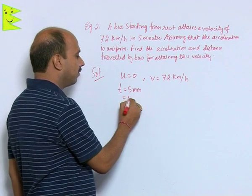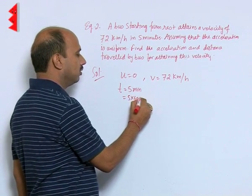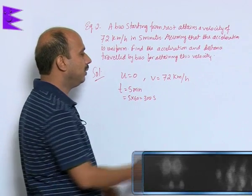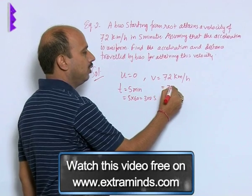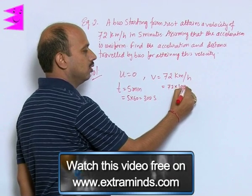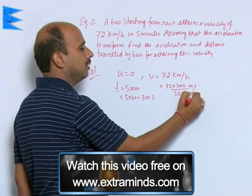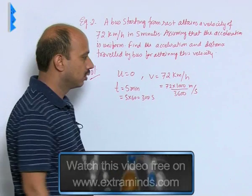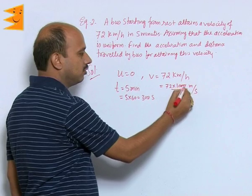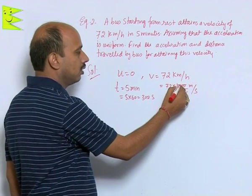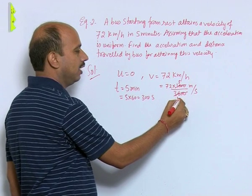So time we can write 5 into 60, that is 300 seconds. Here velocity we can write 72 into 1000 divided by 3600 meters per second.